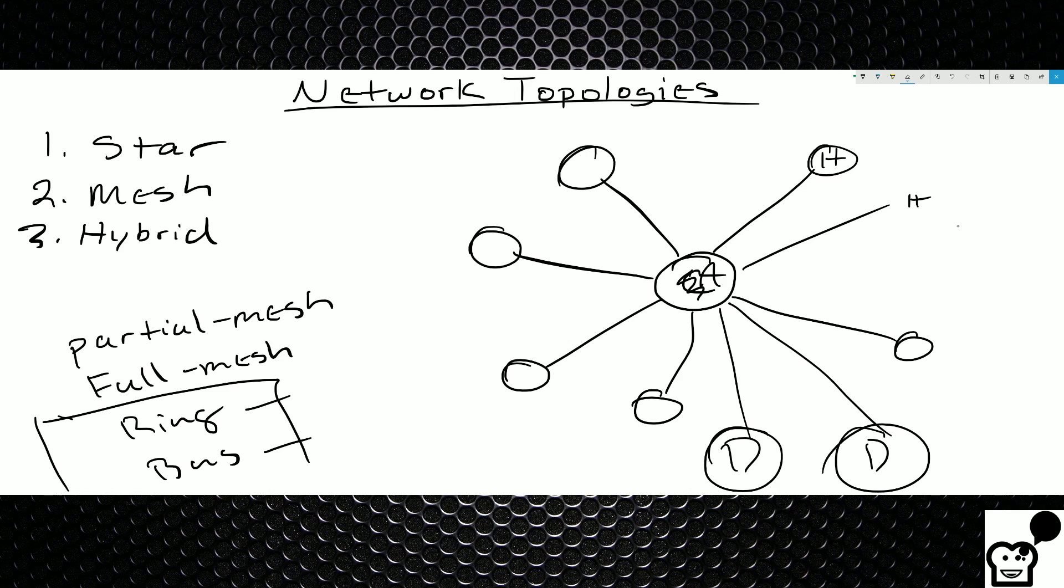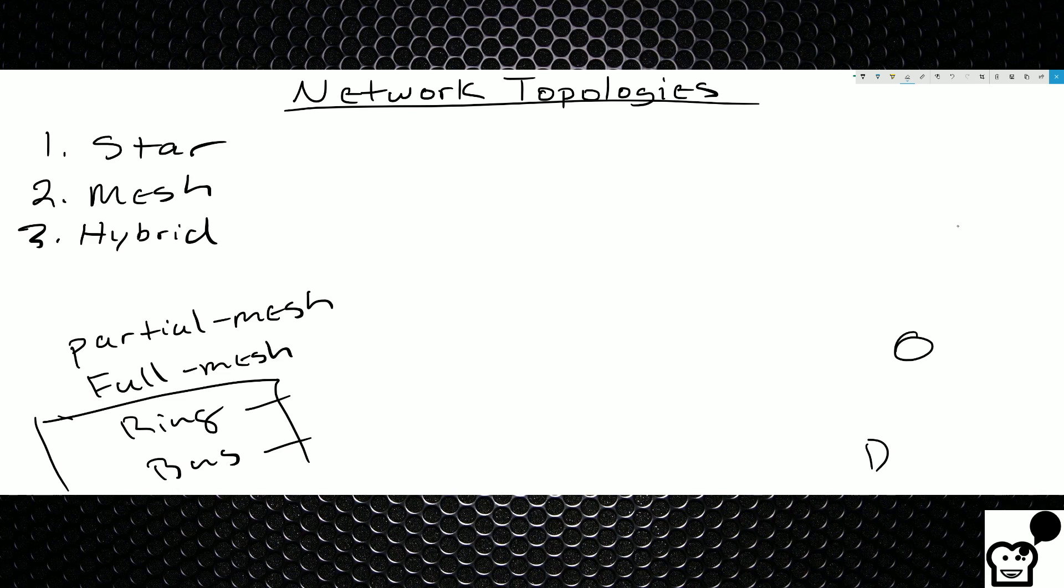So technically when you look at an access layer switch isolated like this it is a star topology. And for exam purposes a star topology is just going to be anything that has one central hub that everything is going to connect to. I'm going to use the word hub, I'm not talking about an actual hub, that right there the example was a switch.